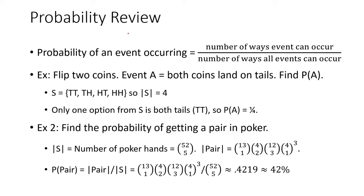This is just a quick review of probability. The probability of an event occurring is going to be the number of ways an event can occur versus the number of ways all events can occur.